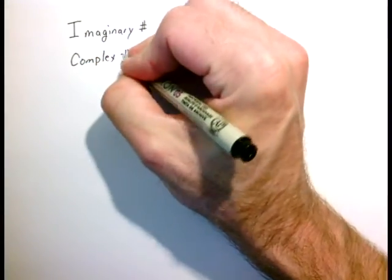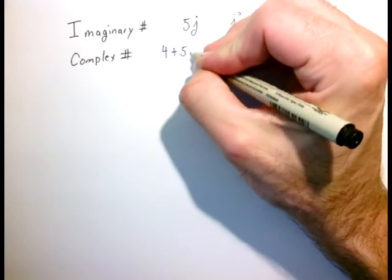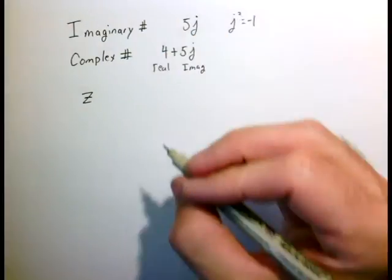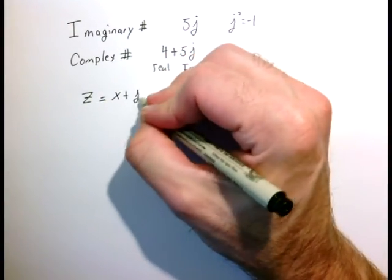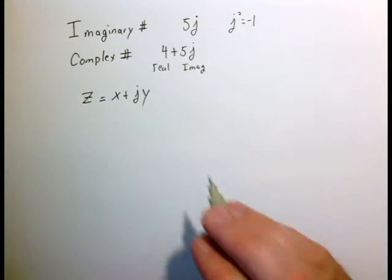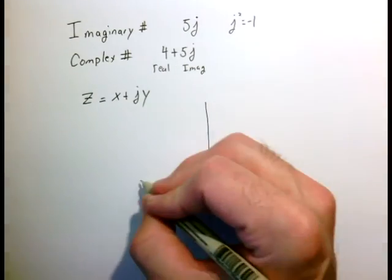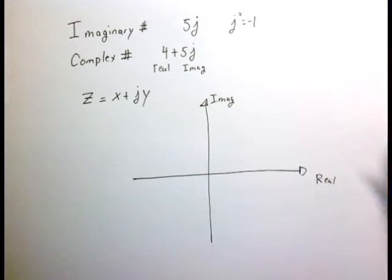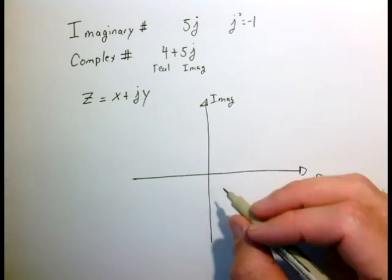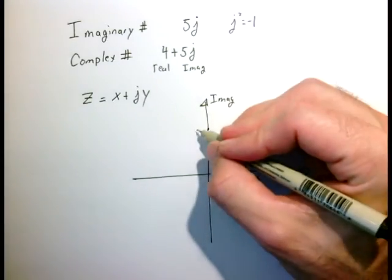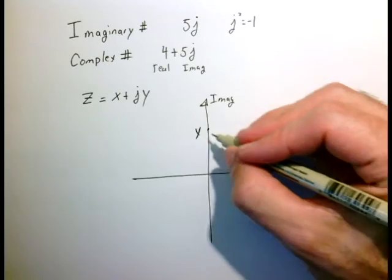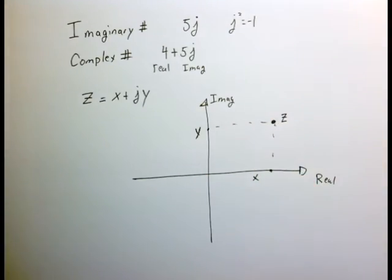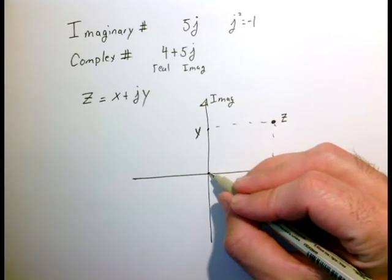This is what we call an imaginary number — some familiar number times this number j. A complex number is one that has both a real and an imaginary part, something like 4 plus 5 times j. Our generic complex number z we could write as x plus jy. A common way to represent this is as a simple plot, where on the x-axis we put the real number and on the y-axis we put the imaginary number, giving us our complex number x plus j times y.